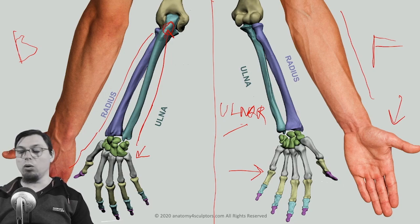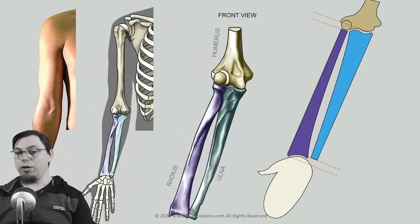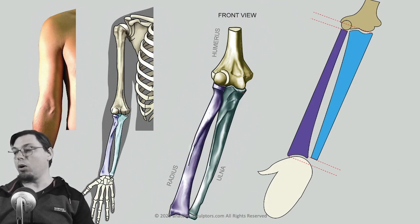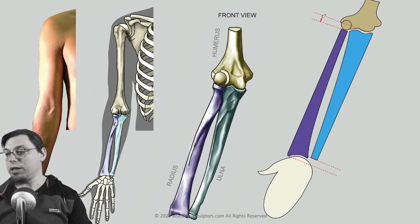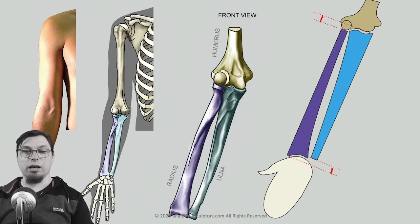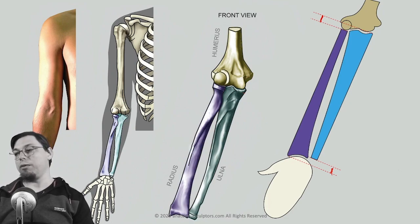Looking from the front, at both the distal and proximal ends, the bones may seem like different sizes at first glance, but in reality the ulna and radius are the same size — they are just shifted relative to each other. This is similar to the tibia and fibula in the lower limb, which are also the same size but shifted. Both upper and lower limbs share this same feature.